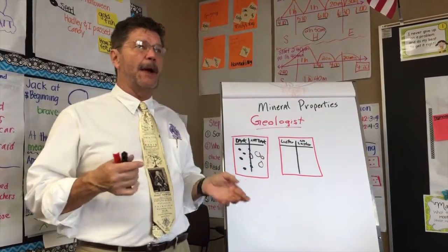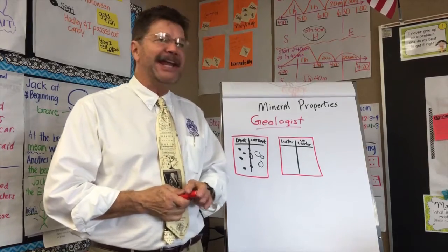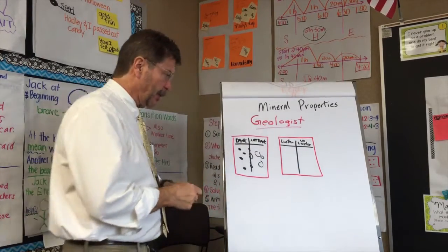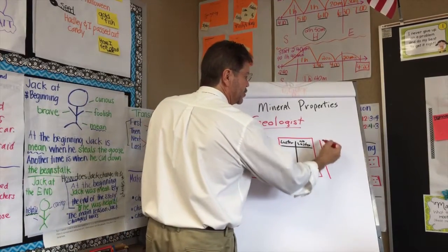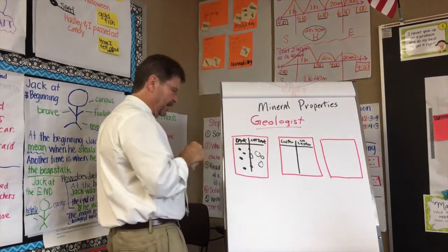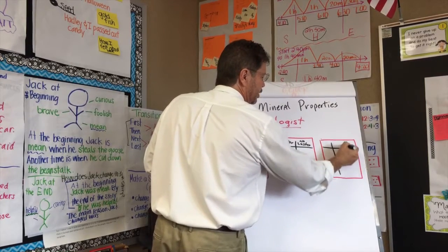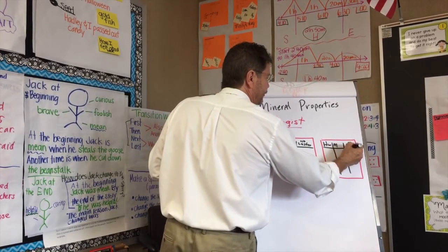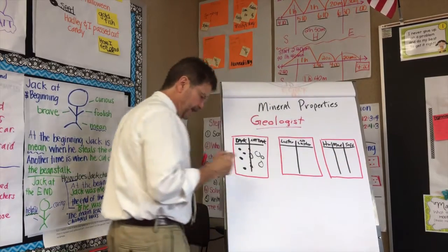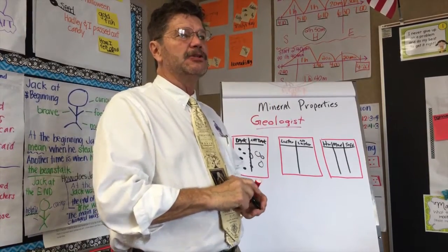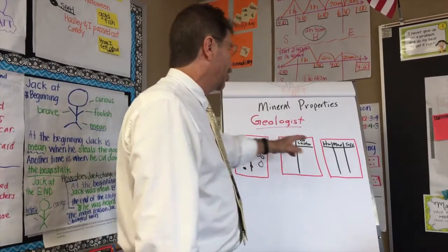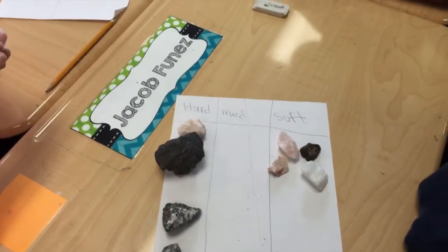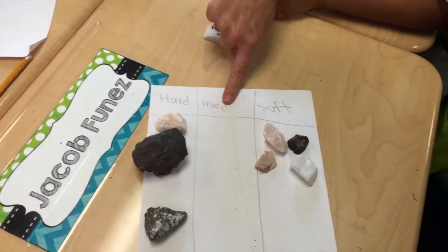When you start describing something, that's a property. You notice I haven't asked you to name what these are — naming comes at the very end. When a scientist, a geologist, finds a rock, they start looking at the different properties. Let's do another one. We're going to divide it into three columns: hard, medium, soft. If you can scratch it with your thumb, that's soft. Sort the next person's minerals by hard, medium, or soft. Everything in this column — these are hard rocks — and we don't have any that are medium.